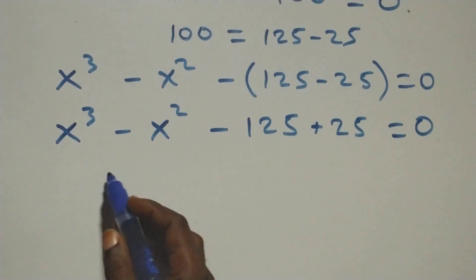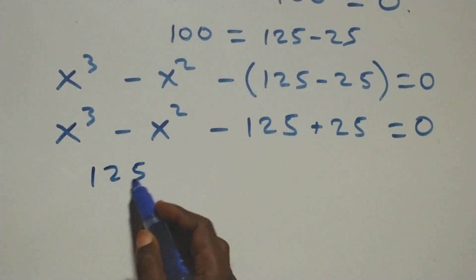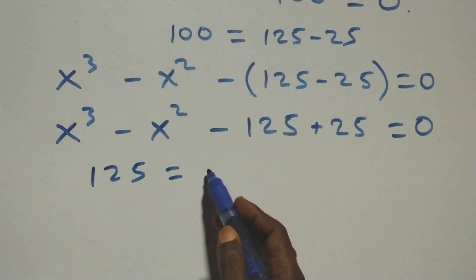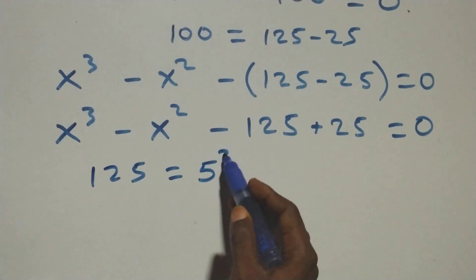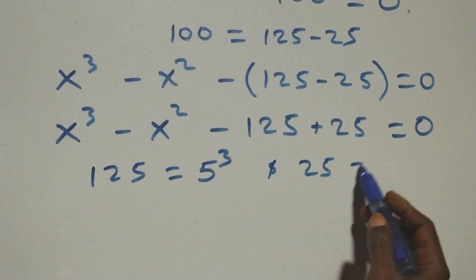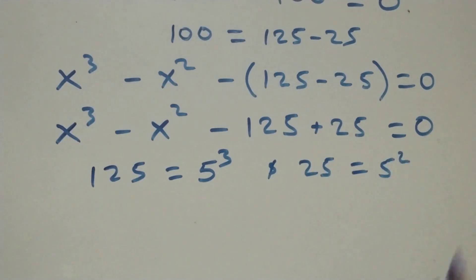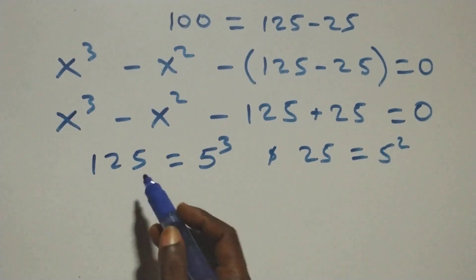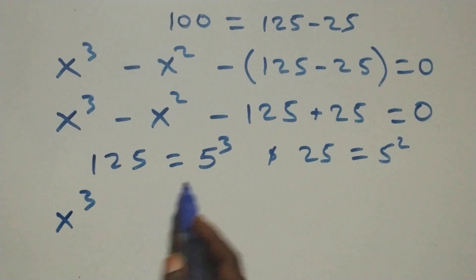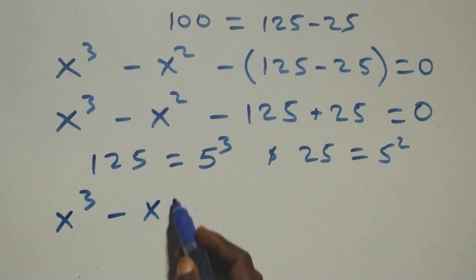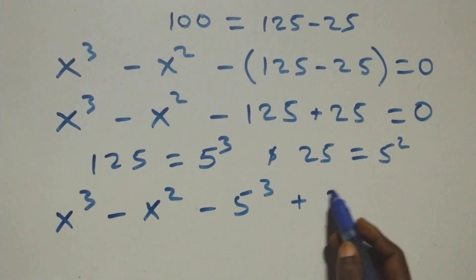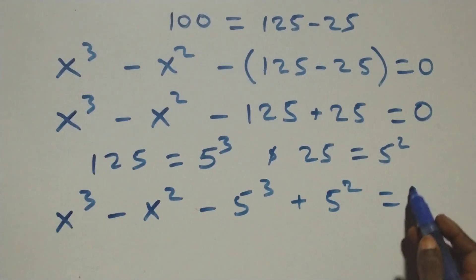Then also, we can express 125 as 5 times 5 times 5, that's 5 raised to power 3, and also 25 as 5 times 5, that's 5 squared. Then we can rearrange and write: x raised to power 3 minus x raised to power 2, then minus 5 raised to power 3, plus 5 raised to power 2, equals to 0.